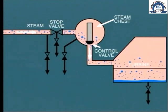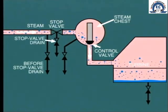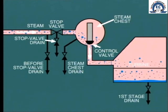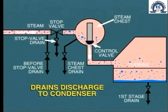For this reason, during startup, great care and attention must be paid to correct operation of drains which are fitted to the main steam line, the turbine stop valve, the steam chest, and the turbine shell. These drains usually discharge into the condenser so that the water can be recovered and recycled back into the system.